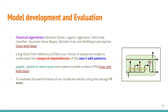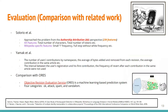We evaluated our work against related work in the field. One comparison was with Dr. Solario et al., who considered authorship attribution features and Wikipedia-specific features. Another study by Dr. A. Magdal considered the number of user contributions by namespace. We additionally considered ORES — the Objective Revision Evaluation System — a machine learning prediction system by Wikipedia that categorizes articles into four classes: OK, Attack, Spam, and Vandalism with a score.